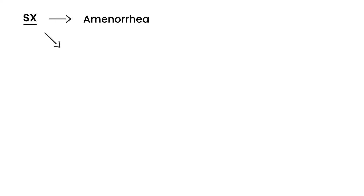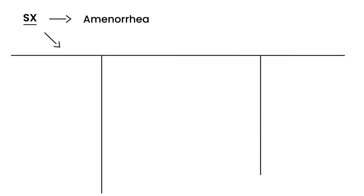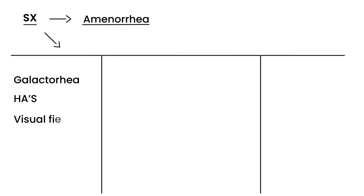For example, if a person comes in and in addition to amenorrhea she has galactorrhea, headaches, and visual field defects, you will most likely think of prolactin and think that this is a pituitary disorder. These symptoms will lead you toward figuring out the cause.